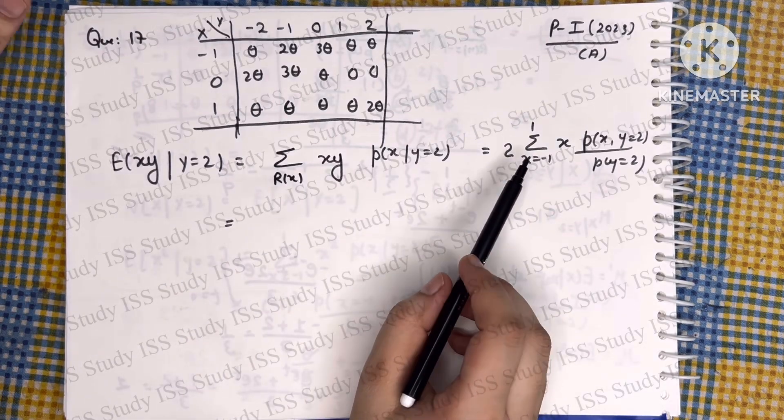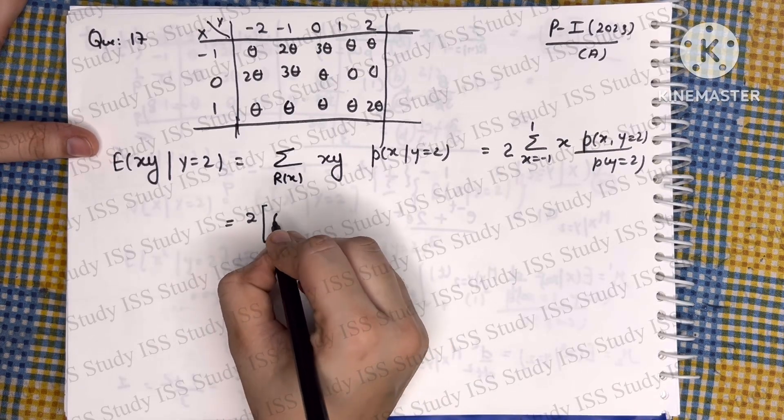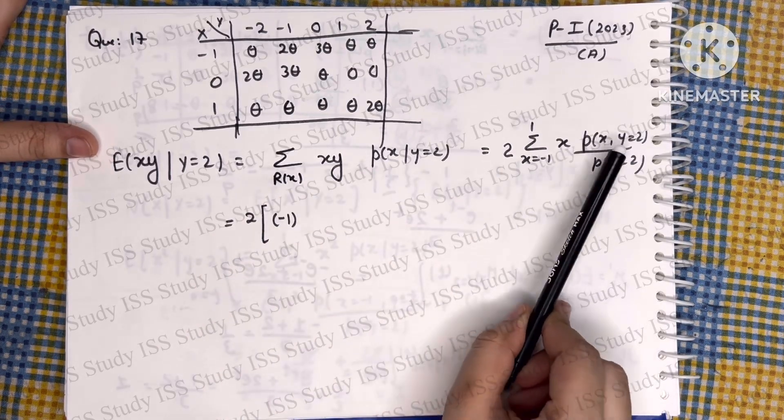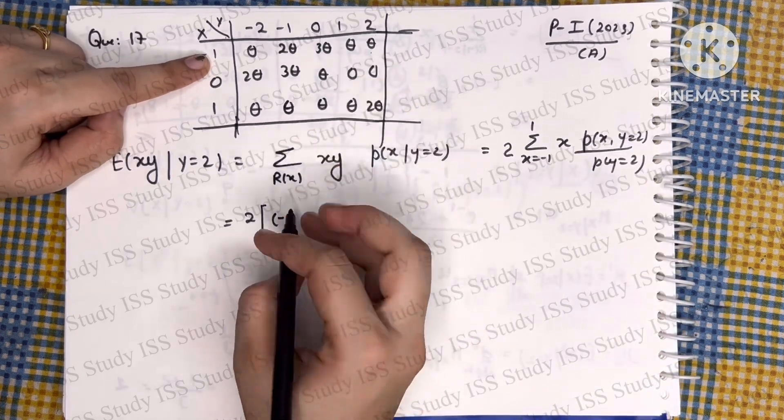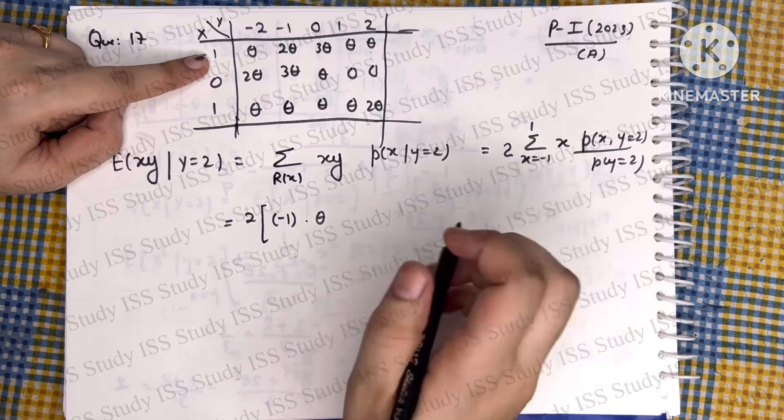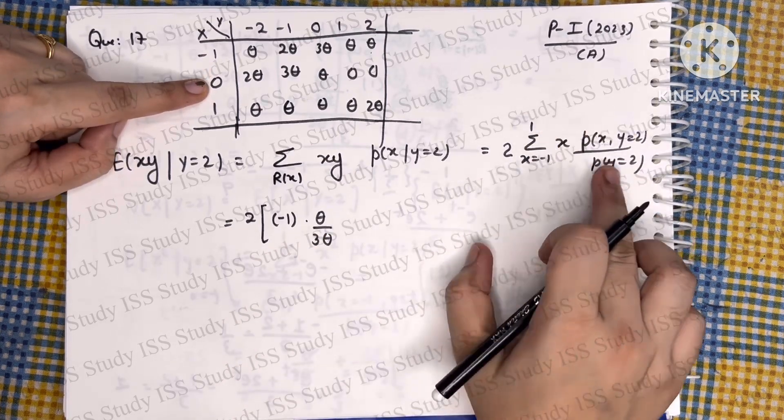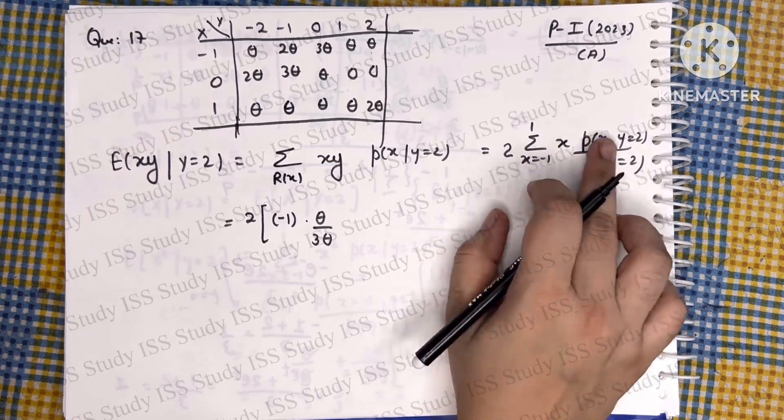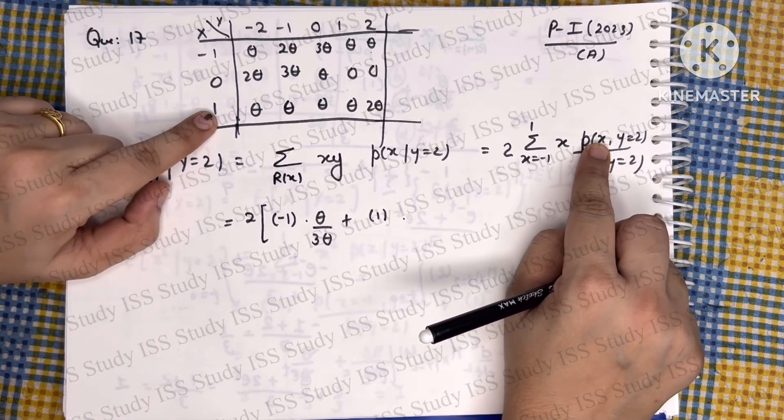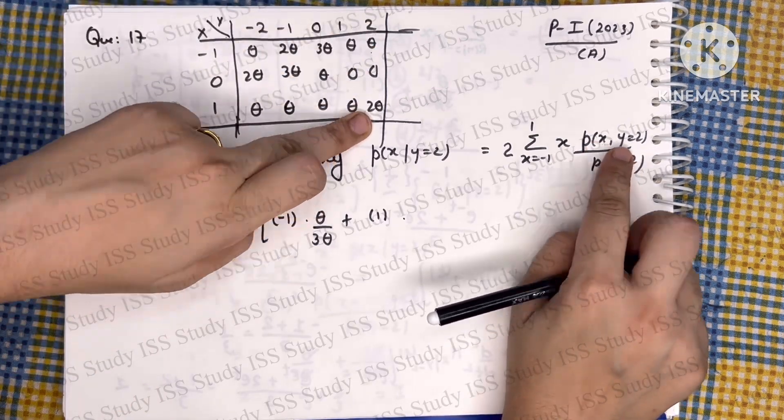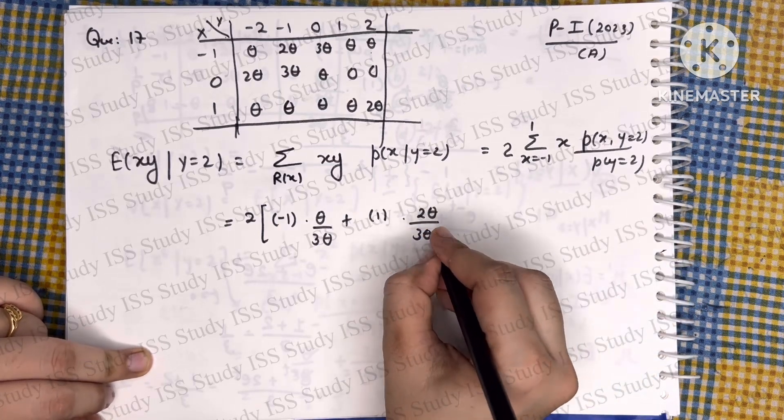Now you can see when X takes value minus 1, putting this 2 outside, when X equals minus 1 and Y equals 2, we have theta. For Y equals 2 in the denominator we have 3 theta. When X takes value 0, I'm not writing that because it will become 0. When X equals 1 and Y equals 2, the joint PMF is 2 theta, and in the denominator we have 3 theta.